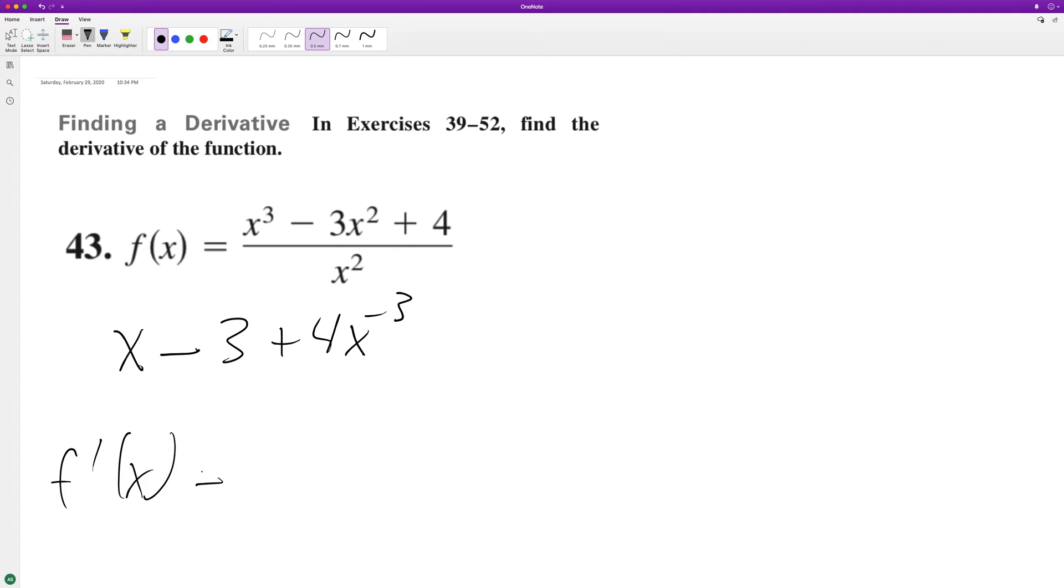So f prime of x is going to be equal to the derivative of x is 1, derivative of a constant 3 is 0, plus negative 2 times 4, x subtract 1 from that negative 4.